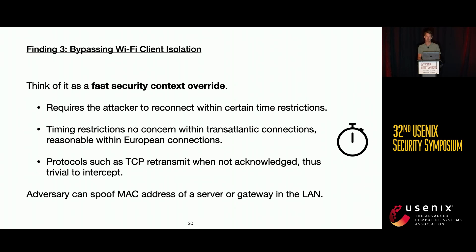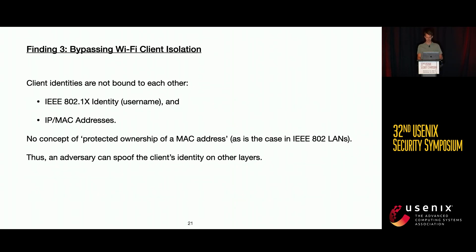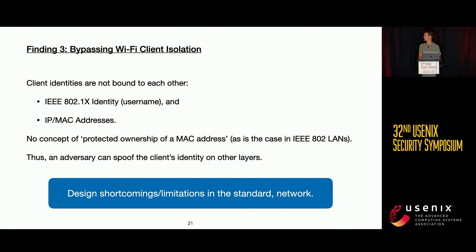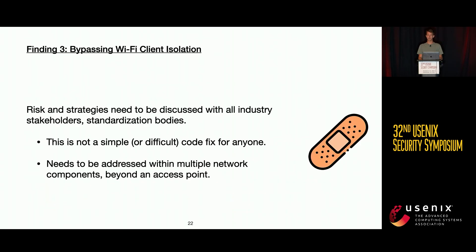An adversary can also spoof MAC addresses of servers or gateways in the network, thereby stealing data intended for those components. The fundamental reason this is possible is that in Wi-Fi networks, client identities are not bound to each other — you can connect with your credentials, but this doesn't imply ownership of IP or MAC addresses within the network. This allows an attacker to spoof these identities and break the connection.